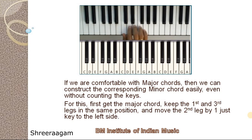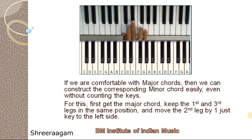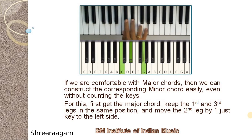For example, you know C major chord already. Now, keeping the first leg and the third leg in the same position, move the middle leg by one key to the left side. My middle finger is here — I am just moving to the left side by one key. This is C minor chord.